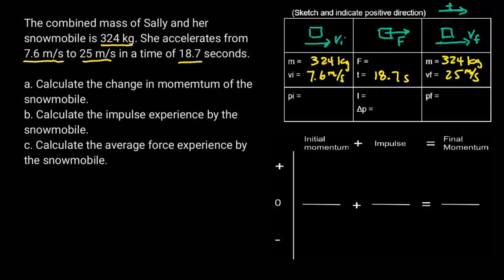From here, I'm going to calculate the initial momentum: mass times velocity, 324 times 7.6, and I get 2,462.